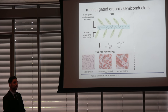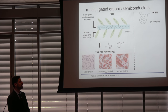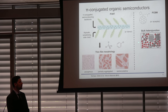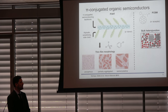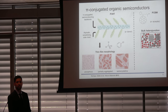A pure P3HT film can be used to make an organic field-effect transistor. But to make a solar cell, you need to mix it with an electron acceptor. The most common one is PCBM, a fullerene-based acceptor. When mixed with P3HT, you create what's known as a bulk heterojunction. This solar cell morphology consists of three phases: a PCBM-rich crystalline phase, a P3HT-rich crystalline phase, and a well-mixed phase of PCBM within the amorphous domains of P3HT.